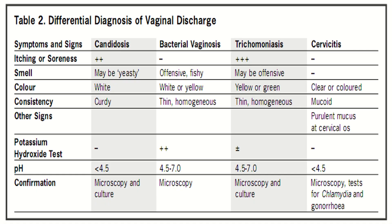This chart shows the differential diagnosis of vaginal discharge. In candidiasis, itching is present, smell may be yeasty, color is white, consistency is curdy, pH may be less than 4.5, and confirmation is by microscopy and culture.